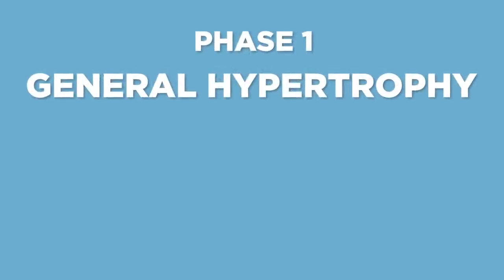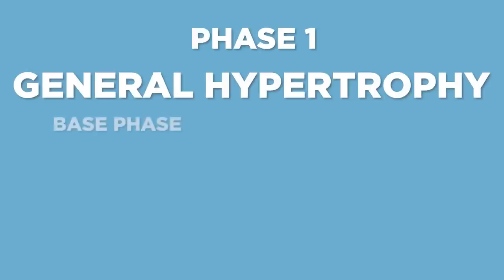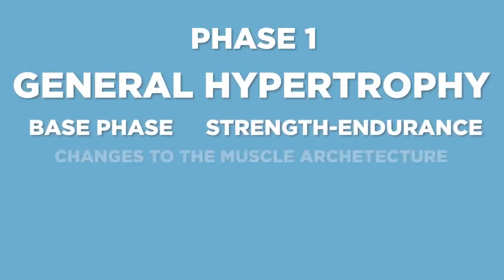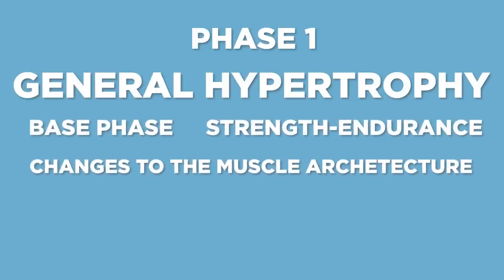Stage 1, or phase 1, is general hypertrophy. Sometimes known as a base phase or a strength endurance phase, the main goal is to produce changes to the muscle architecture — you want to develop muscle tissue. Muscle tissue should be thought of as contractile tissue; it's the only one doing work. Tendons attenuate the power for muscle contractions, but without the muscle tissue present, we're severely lacking the basic needs.